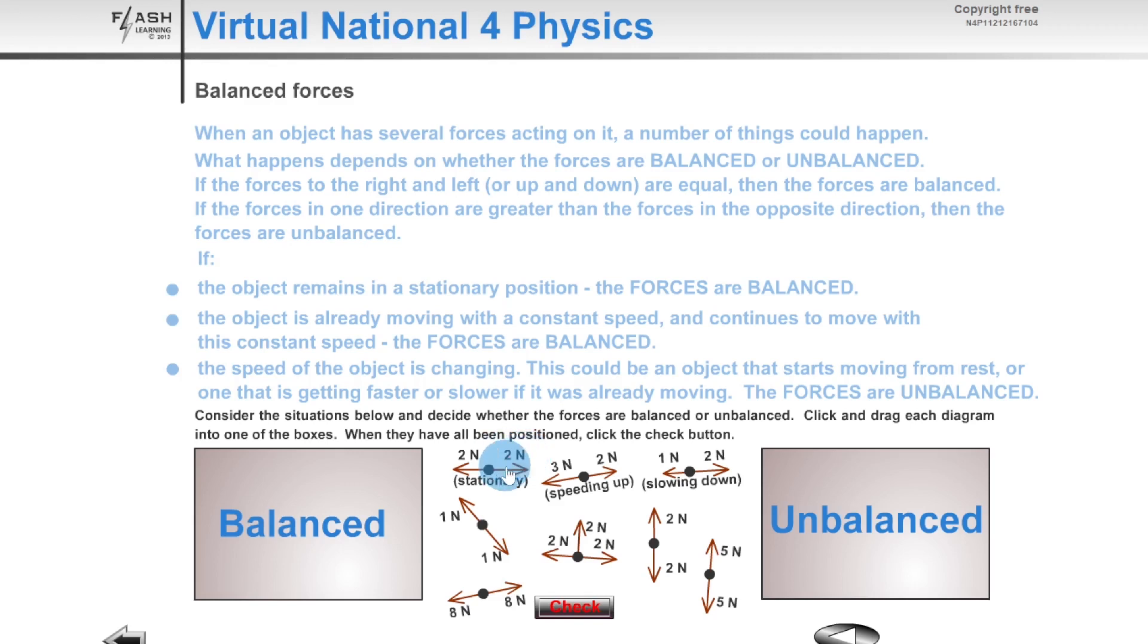So if we were to combine the forces there, they're going to cancel each other out to give us a resultant force of zero newtons, so this is balanced forces. We then have three newtons to the left, two newtons to the right, which is speeding up. So this gives us a resultant force of one newton to the left, which I can then put in unbalanced.